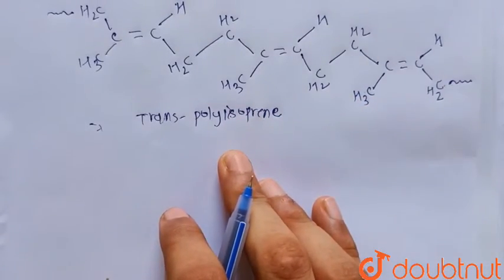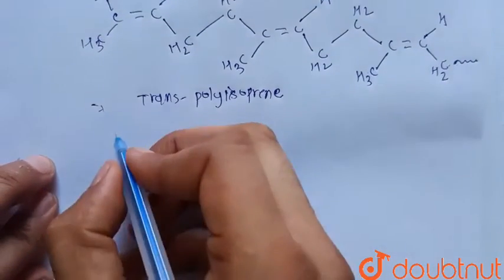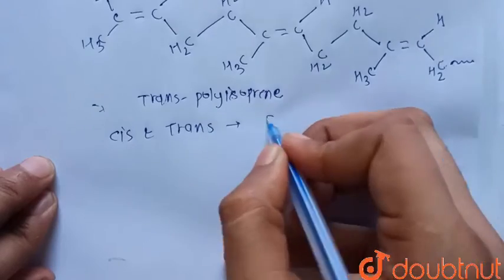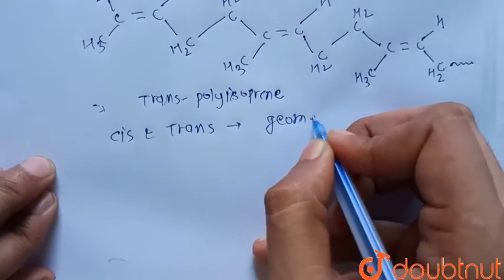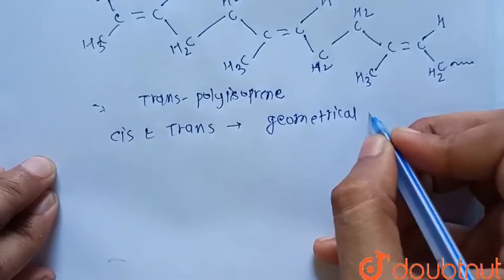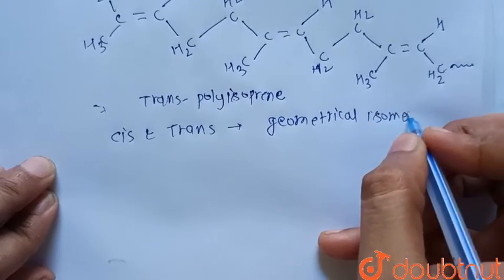So we know that cis and trans isomerism is called geometrical isomerism.